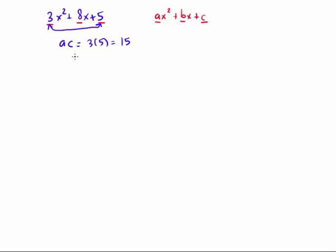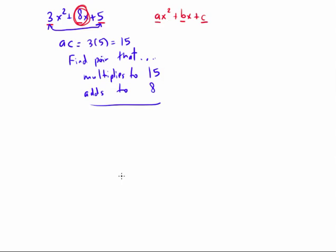And what we do next is we look for a pair that does two things. It multiplies to the number we just computed. It multiplies to AC, or in other words to 15, and then it adds to b. It adds to the number on the x, it adds to 8 in this case. So we need to find a pair of numbers that multiplies to a positive 15, and at the same time adds to positive 8. And the technique we usually go through for this is we just start listing what are the possible pairs of numbers that multiply to 15. Just start with that. Well, there aren't too many. It could be 1 times 15, or it could be 3 times 5, and that's it.